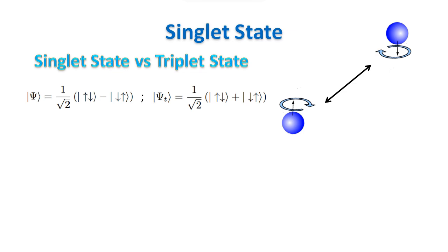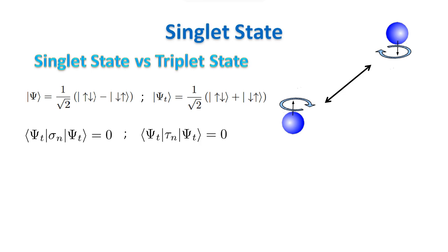The triplet state is the superposition of the same basis vectors as for the singlet state, but this time with a plus sign. For the triplet state, it is still true that the expectation value of the sigma and tau operators is zero, as it was for the singlet state.